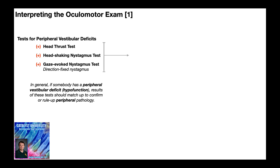So if these tests are all positive, suggesting a peripheral vestibular deficit or hypofunction, what do you do about that? What's your treatment approach? In general, the treatment approach is to give an adaptation exercise, and in general, adaptation exercises are gaze stabilization exercises.